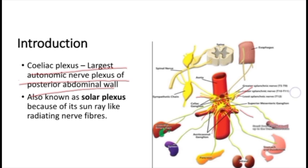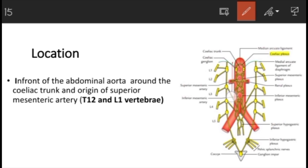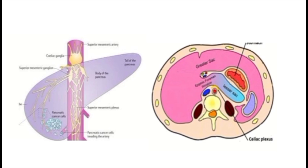If you look at the location of the celiac plexus, it is located in front of the abdominal aorta, around the celiac trunk and the origin of the superior mesenteric artery. If you watched the previous video on blood supply of the abdomen, the celiac trunk and superior mesenteric artery are explained there. At the level of T12 and L1 vertebrae, the celiac plexus is located around the celiac trunk, and in a sagittal section it is located behind the stomach and the lesser sac.